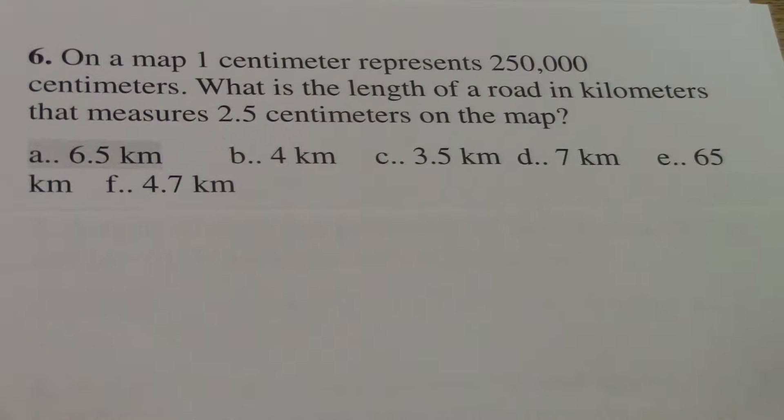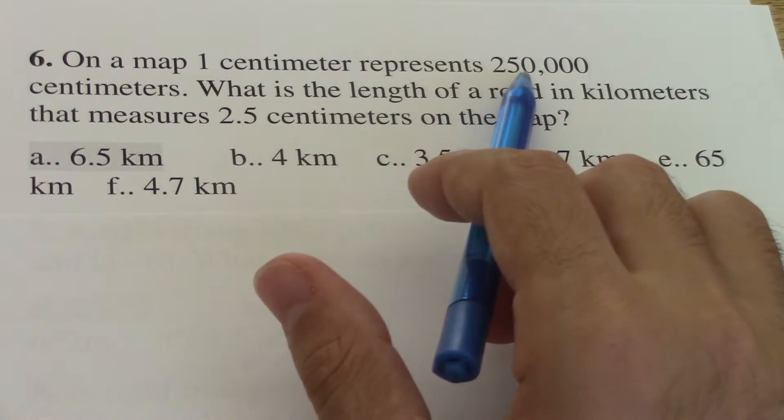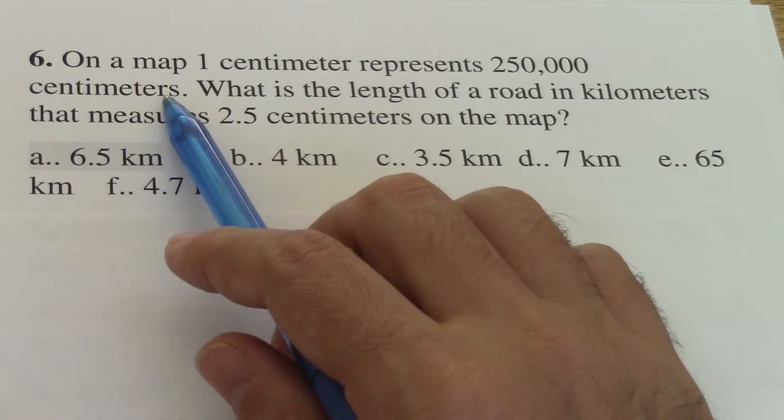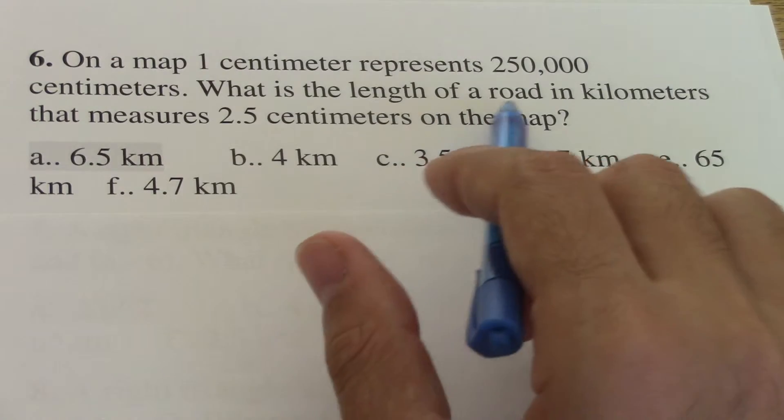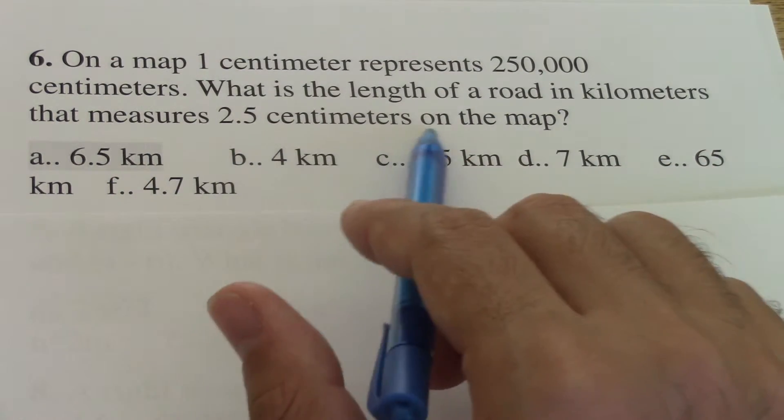Okay, let's continue with the SAT practice. It says on a map, one centimeter represents 250,000 centimeters. What is the length of a road in kilometers that measures 2.5 centimeters on the map?